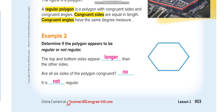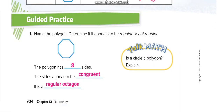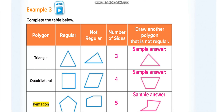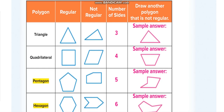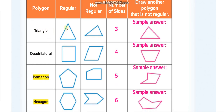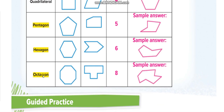In terms of number of sides, we have more types. Three sides — regular or not regular — we call it a triangle. Four sides — regular or not regular — we call it a quadrilateral. Five sides is a pentagon, six sides is a hexagon, and eight sides is an octagon. These names apply whether they are regular or not regular.